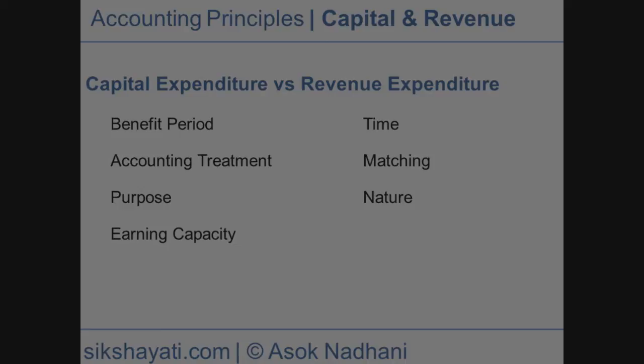Regarding purpose, capital expenditure involves the acquisition of fixed assets meant for use and not for resale. Revenue expenditure does not involve the acquisition of any fixed asset. Regarding earning capacity, capital expenditure is incurred for improving the earning capacity of fixed assets.